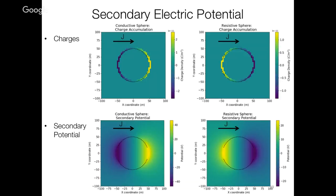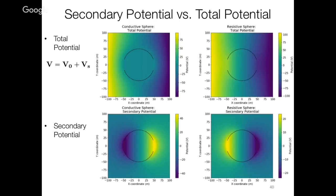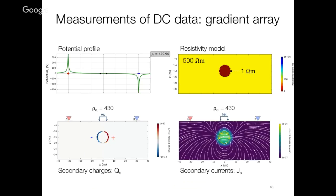If you have a current coming in and you've got a conductive sphere, you're going to have negative charges on one side and positive on the other. If you've got a resistive sphere, the charges are reversed — positives and negatives switch. The total potential is the sum of all charges including the source charges, while the secondary potential is just due to the charges on the cylinder itself.